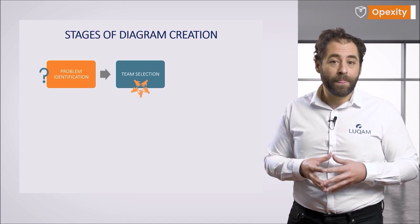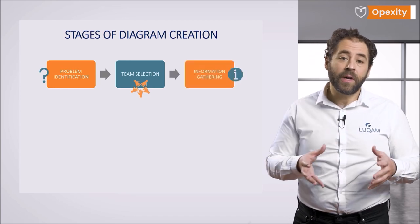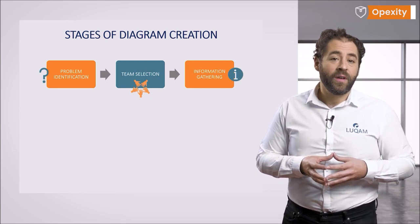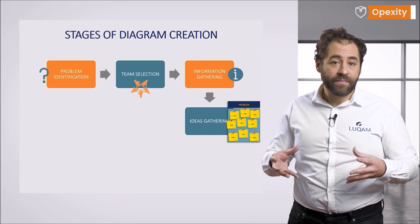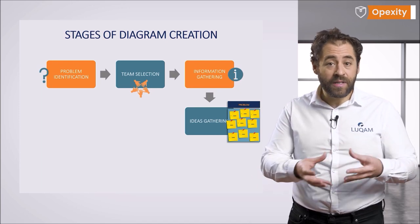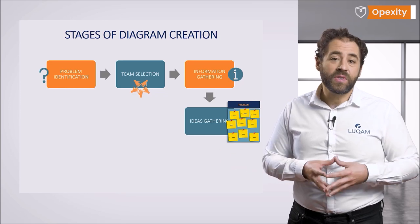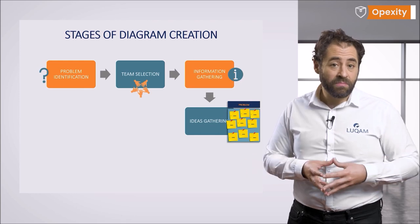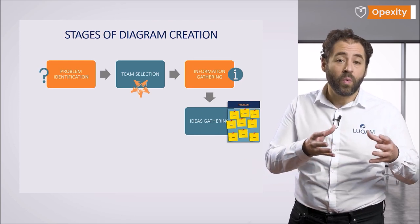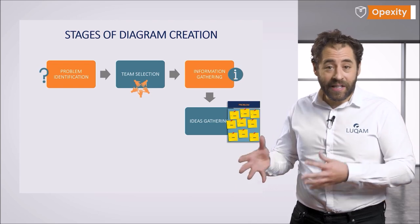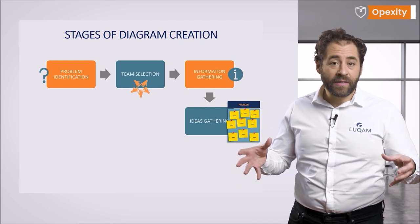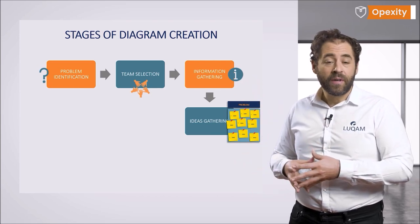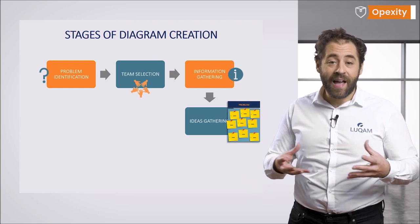In the third stage, we collect information about the problem to present to the team when creating the diagram. In stage four, we gather ideas: distribute cards and pens to team members. Each participant notes down as many proposals as possible in about 10 to 15 minutes, writing only one idea per card. We then read individual ideas and put them randomly on the board. Each solution can lead to a new one, as others can add fresh ideas in the meantime.